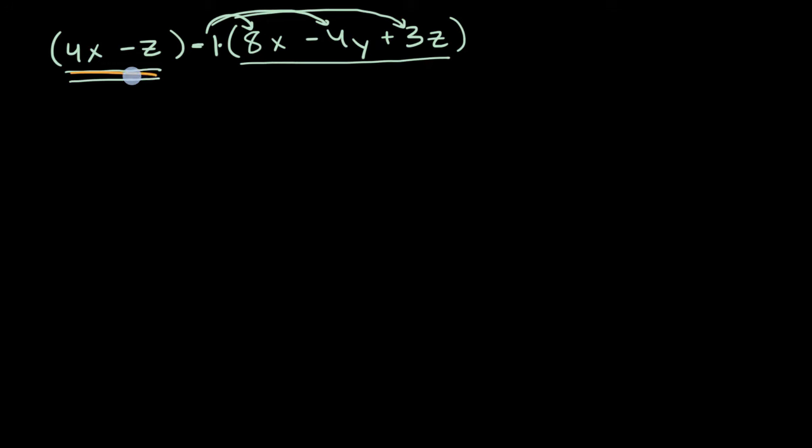So this first part over here, that is just 4X minus Z. And now let's add, so plus, and I'm going to distribute this negative 1 onto each of these terms.